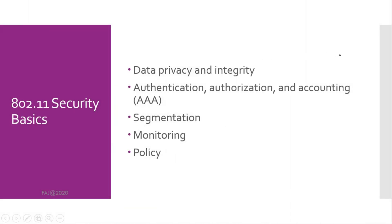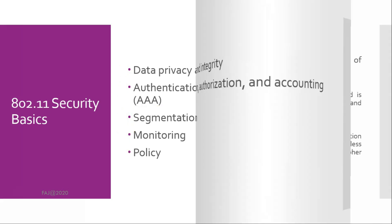802.11 Security Basics. When securing a wireless 802.11 network, five major components are typically required. First, data privacy and integrity. Second, authentication, authorization, and accounting (AAA). Third, segmentation. Fourth, monitoring. And fifth, policy.